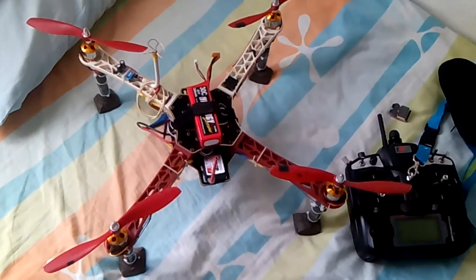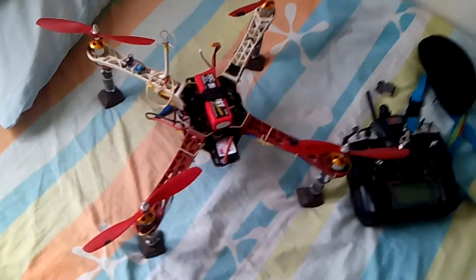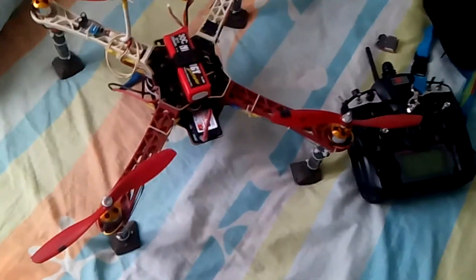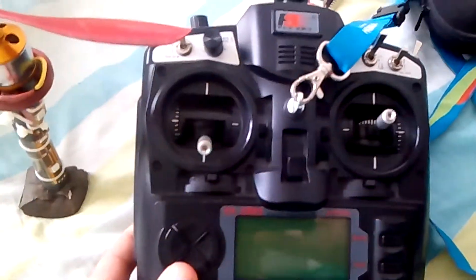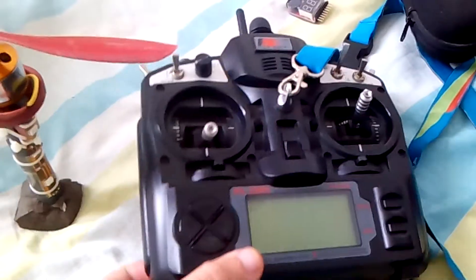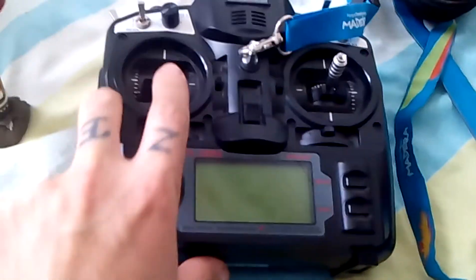Okay everybody, this is a video about my quad. It's a K450 frame and this is my radio, a FlySky TH9XB. You can remove the module, it's Mode 2, and I have LED lights installed, FPV camera.